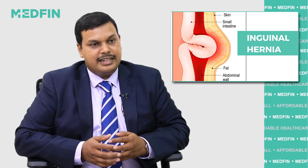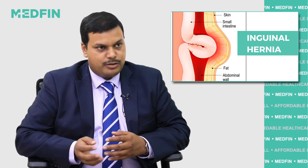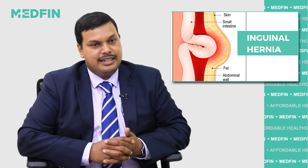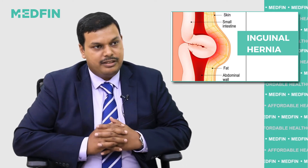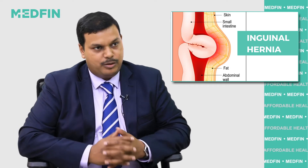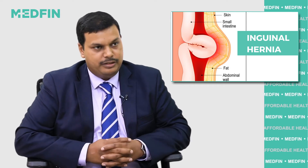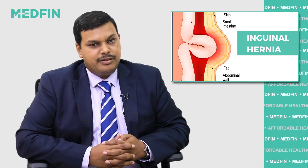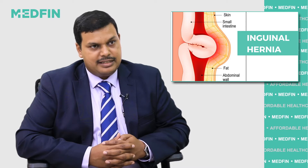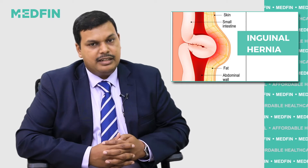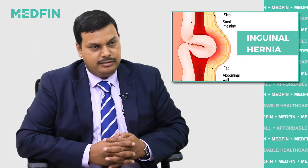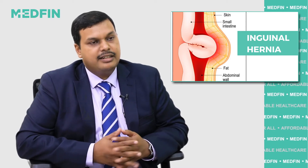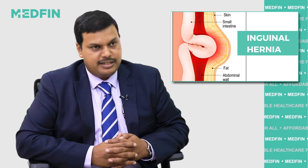The indirect type is when it comes through the inguinal canal, and the direct type is when it tries to push through the wall and come out into the open. The main reason why inguinal hernia is seen is due to increase in the abdominal pressure.